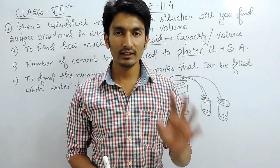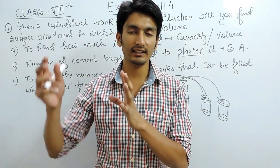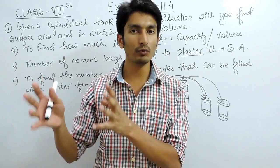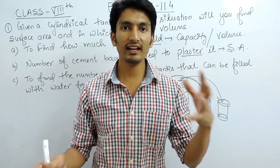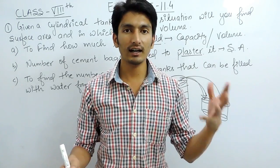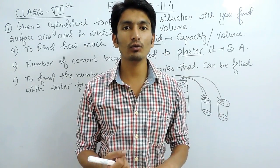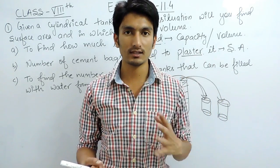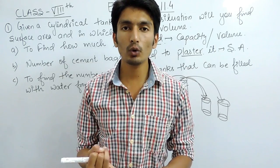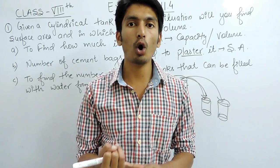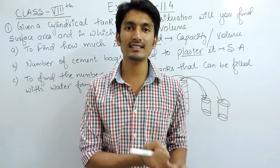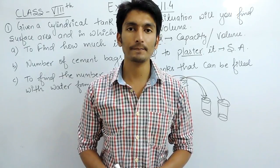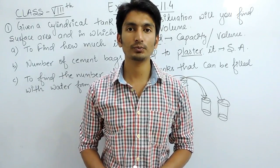So this is how we can distinguish: whenever they talk about capacity, you have to find volume, and whenever they are talking about the walls — something done on the walls — in that case you have to find its surface area. Thank you.